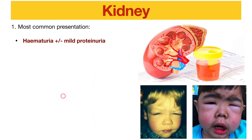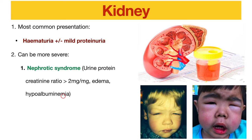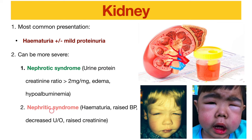The most common presentation of kidney involvement is hematuria or mild proteinuria — red blood cells or small amounts of protein detectable on urine dipstick. It can also present more severely as nephrotic syndrome with nephrotic-range proteinuria (more than 2 mg/mg on spot protein-creatinine ratio), edema such as puffy eyes, scrotal edema, lower limb edema, and hypoalbuminemia. It can also present as nephritic syndrome with hematuria, raised blood pressure, decreased urine output, and raised creatinine.